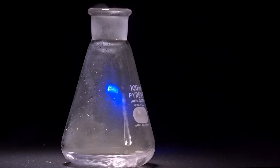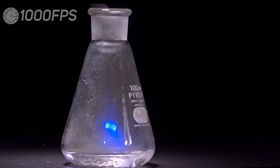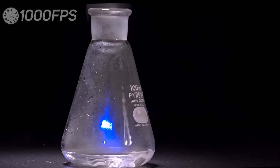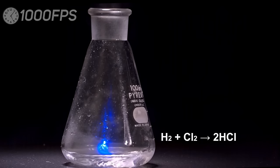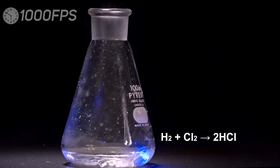See how the cloudy flask becomes transparent, as the reaction results in yellow-green chlorine turning into colorless hydrogen chloride, which then starts to fume in air.